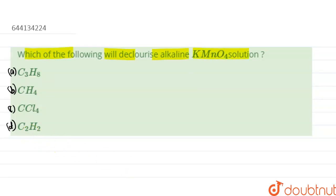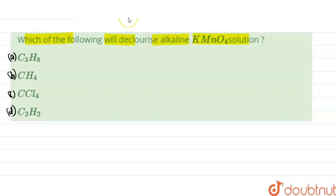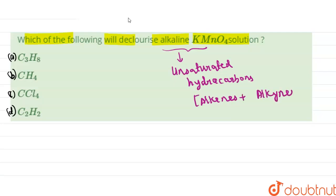So basically, alkaline KMnO4 is acting on unsaturated hydrocarbons like alkenes and alkynes. So we can say that it will not react with alkanes and thus will not decolorize.